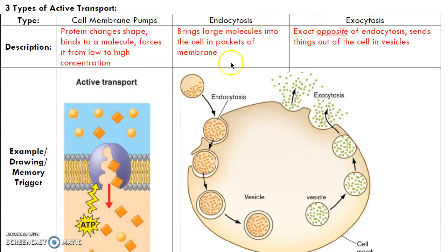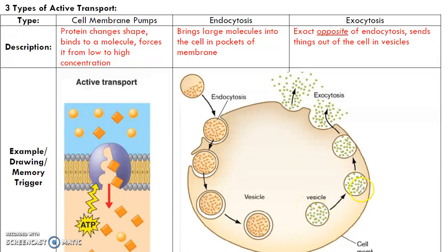Endo and exocytosis are opposites of each other. Endo — think EN, but instead think IN — this is cells moving things in. So they see a large molecule they want, maybe a piece of algae that an amoeba is going to eat, and they create a little pocket in their cell membrane, trap it inside, wrap their cell membrane around it, and bring it inside to digest it. After it's been digested, they wrap it up with a little piece of membrane called a vesicle — usually that piece of membrane comes from the Golgi apparatus. Then they move that vesicle toward the exterior of the cell, the vesicle membrane merges with the cell membrane, and they release all of those products out of the cell.